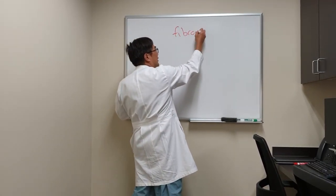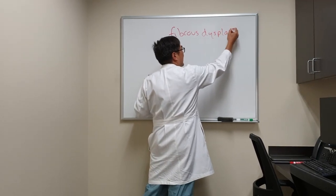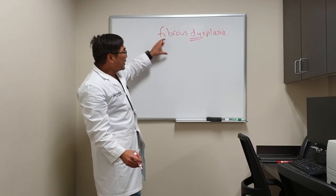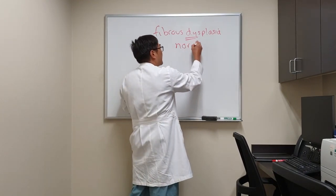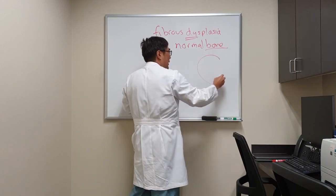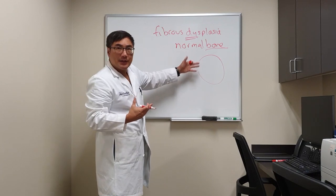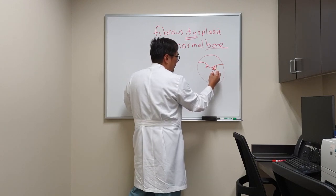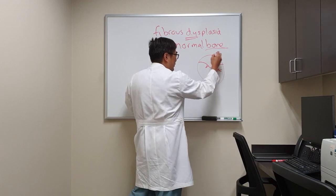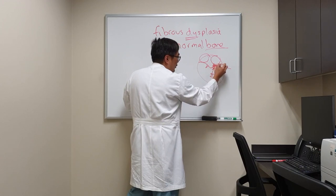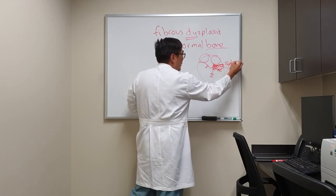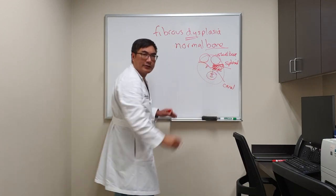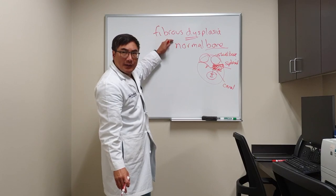Today I want to talk about fibrous dysplasia. 'Dys' means not normal, and 'plasia' means growth of fibrous tissue. So fibrous tissue is replacing your normal bone. In neuro-ophthalmology, we're usually thinking about the skull base. When fibrous dysplasia involves the sphenoid bone or skull base, it can affect the optic canal, which carries cranial nerve 2.